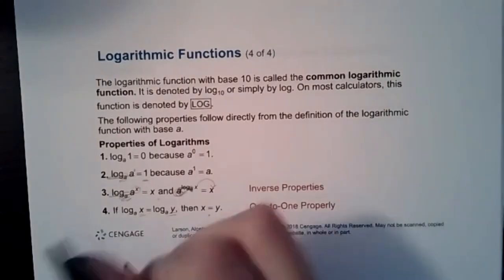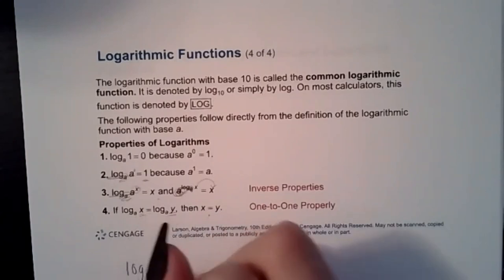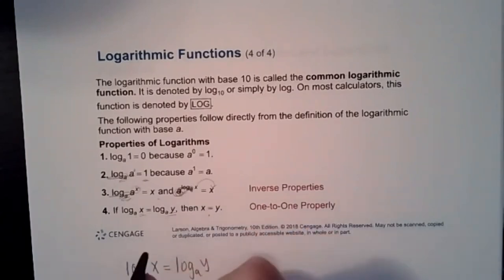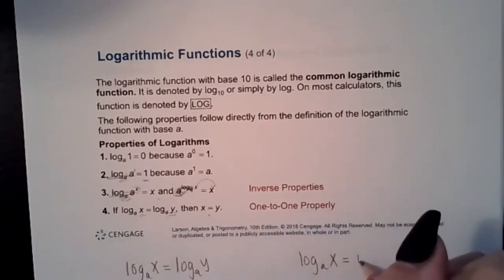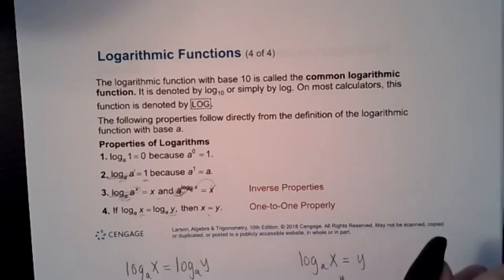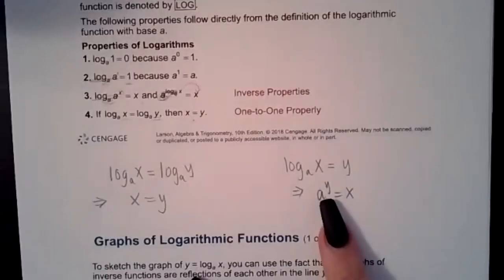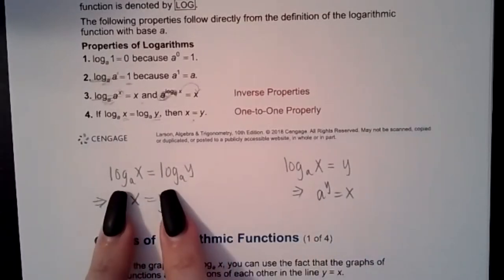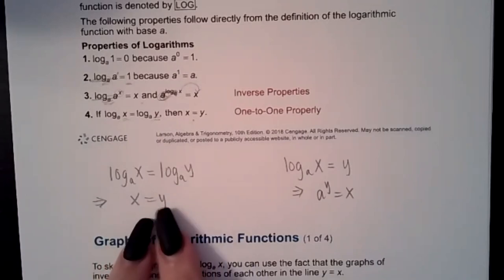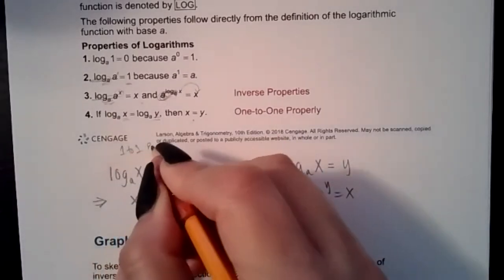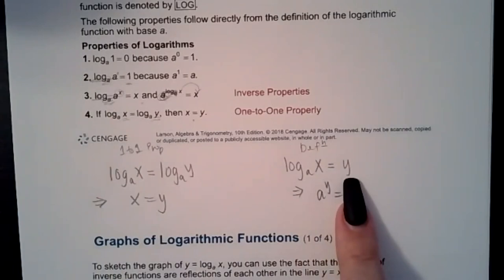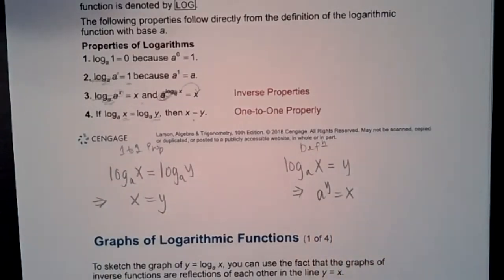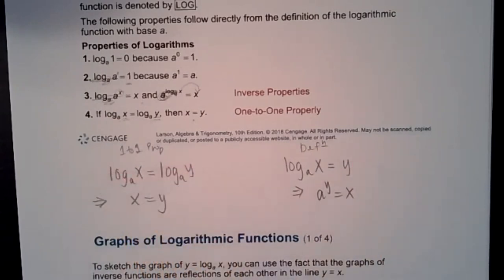There are two strategies for solving logarithmic equations: (1) use the definition to rewrite as an exponential when you have one logarithm equal to a number, or (2) use the one-to-one property when you have two logarithms with the same base on each side of the equation. The method depends entirely on whether the problem has one logarithm or two.